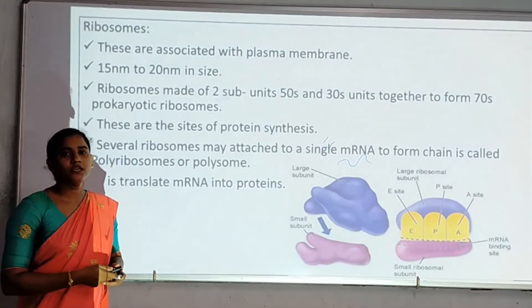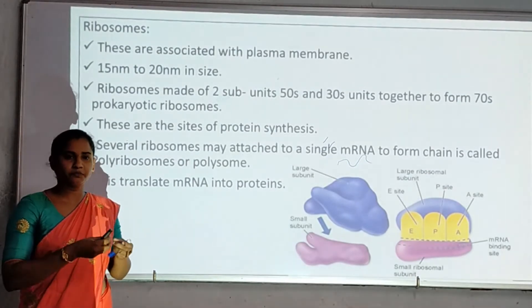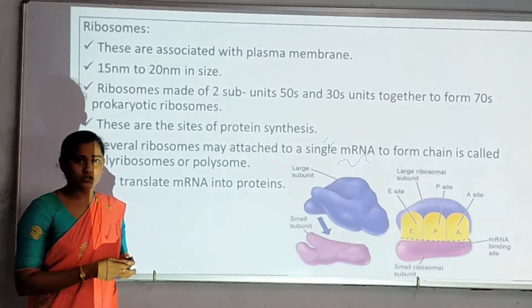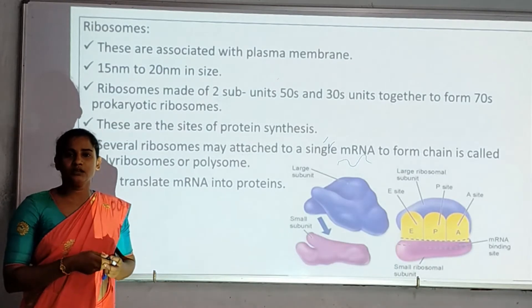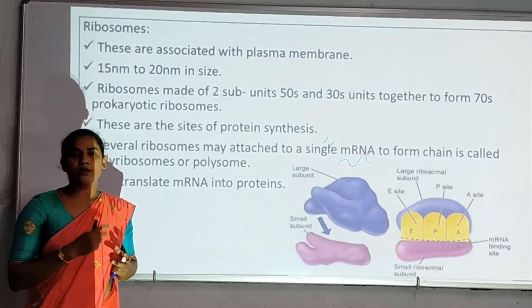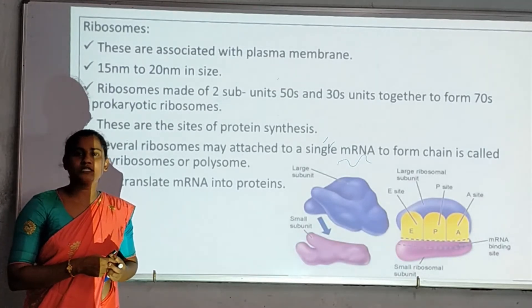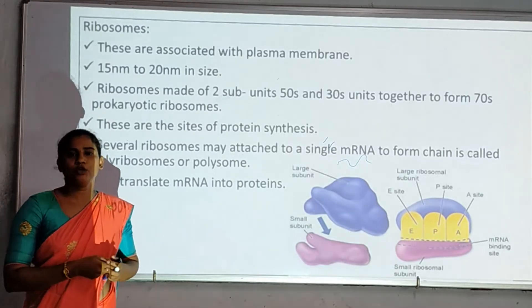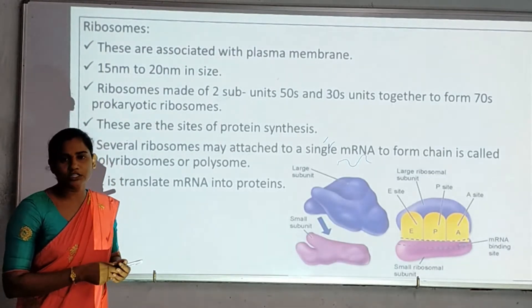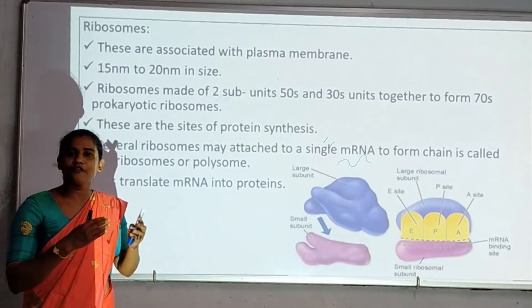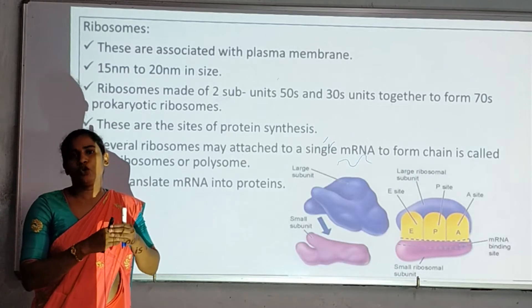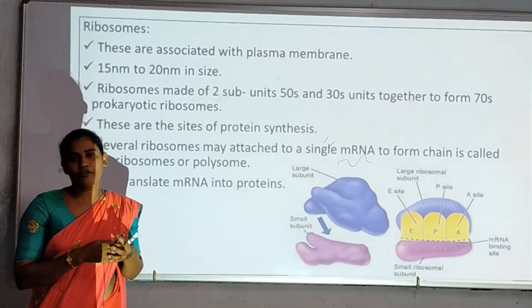Next, ribosomes. Ribosomes are associated with the plasma membrane. Ribosome size is 50 nanometers and 20 nanometers. Bacteria have the 70S type of ribosome with 2 subunits: the 50S subunit and the 30S subunit. Together they form the 70S type of ribosome.